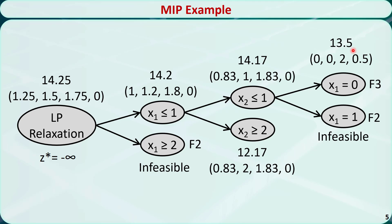This subproblem is fathomed based on test 3 because the integer-restricted variables x1, x2, and x3 are indeed integer numbers. We also need to update z* because 13.5 is better than negative infinity. After updating z*, we recheck unfathomed subproblems. We find that we only have one unfathomed subproblem remaining, but its upper bound of 12.17 is worse than the current z* value of 13.5. So this branch is also fathomed based on test 1.